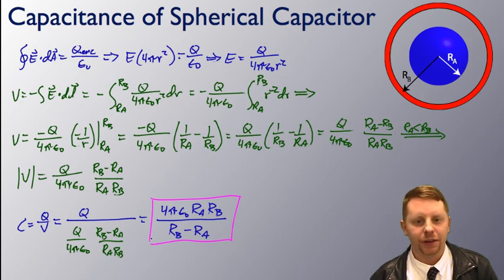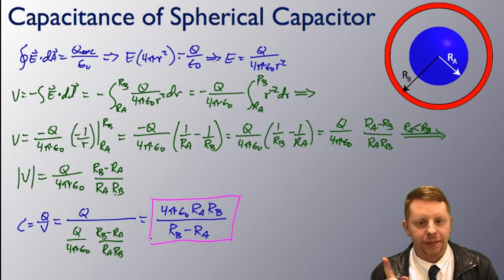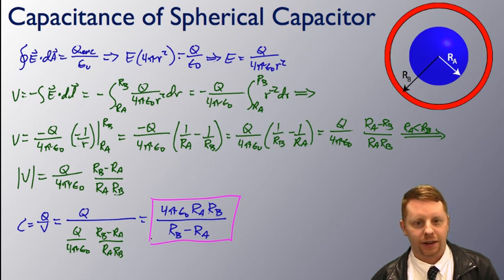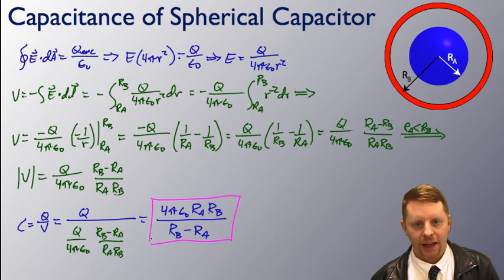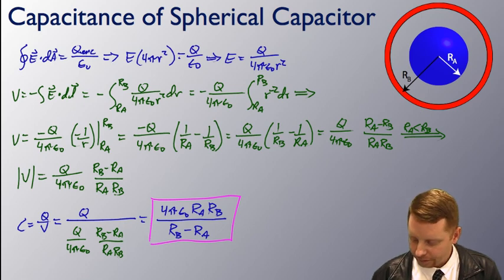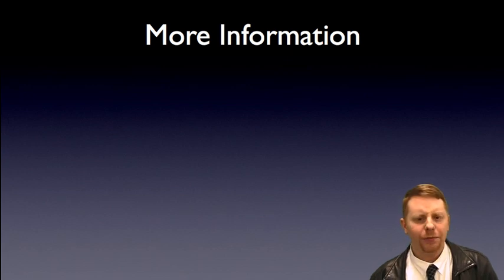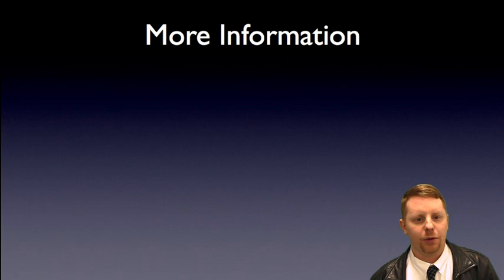In all these cases we followed the same four steps. First, we assumed a charge of plus Q and minus Q on each conductor. Second, we found the electric field between the conductors. Third, we found the potential by integrating the electric field. And fourth, we used that potential in the equation C equals Q over V to solve for the capacitance. Hopefully that gets you started with capacitors and finding the capacitance. If you need more help or are looking for more information, check out aplusphysics.com. Thanks and make it a great day.